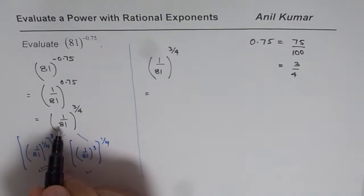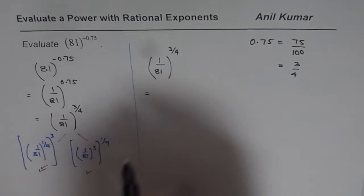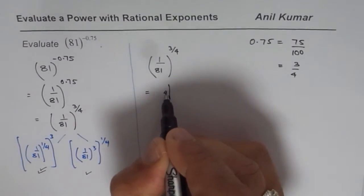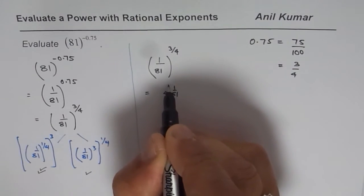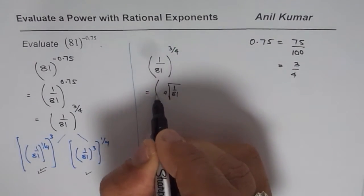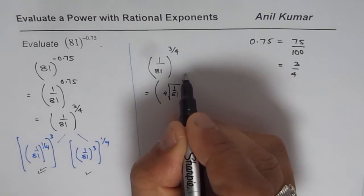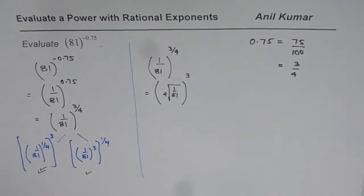And I'm saying that first we'll find the fourth root of this, which I could write like this. Or I could also write fourth root of 1 over 81. These are different ways of writing the same thing with an exponent of 3.